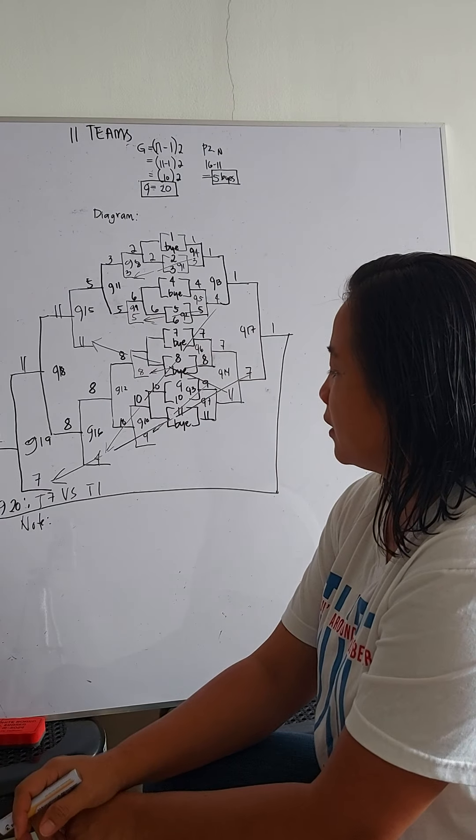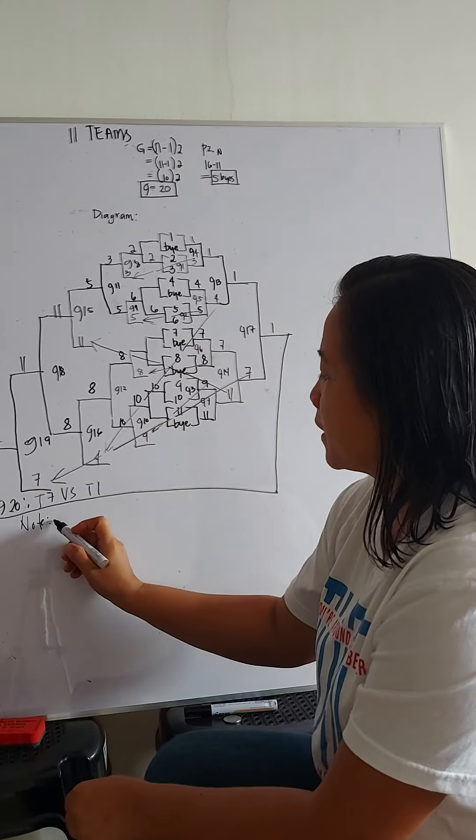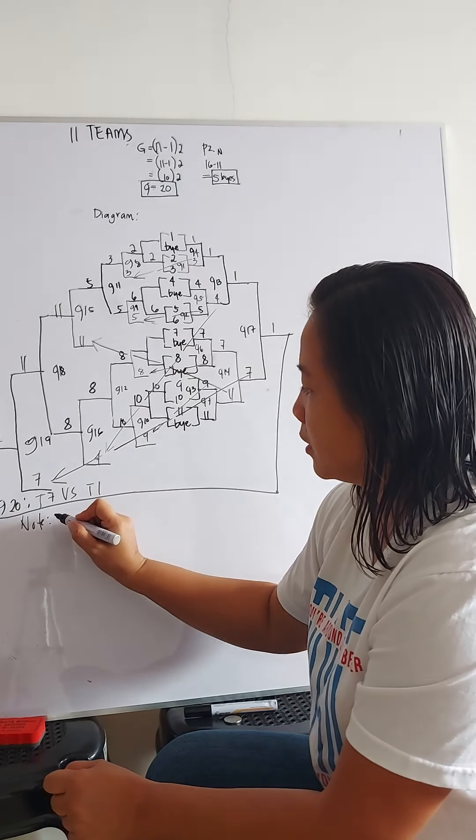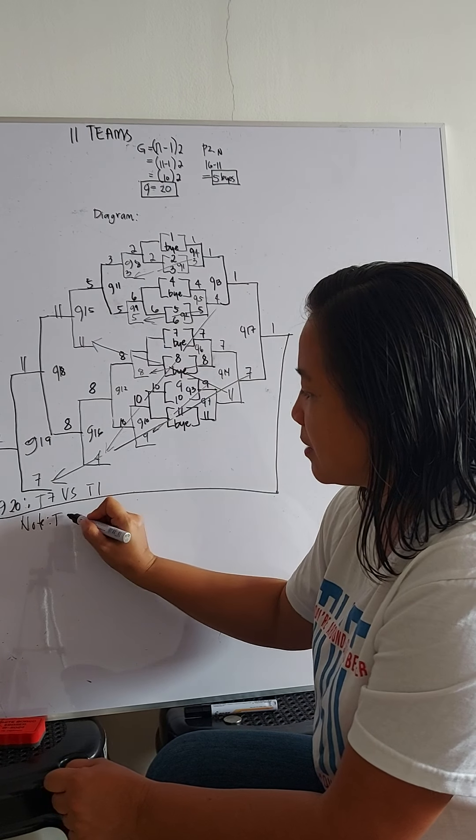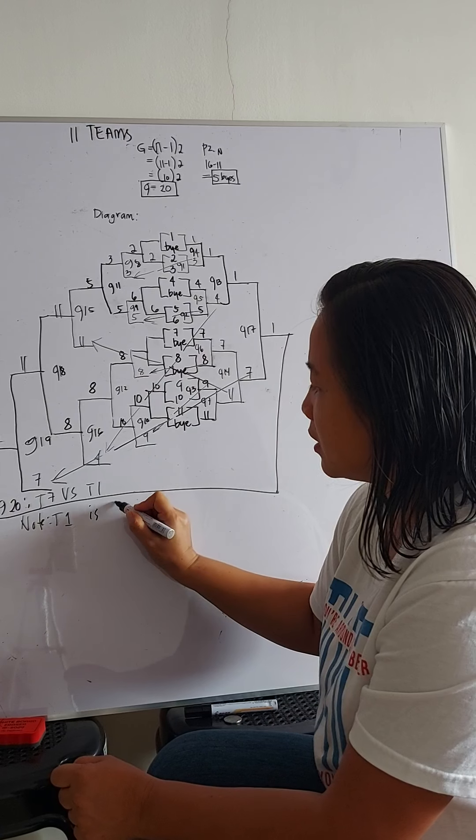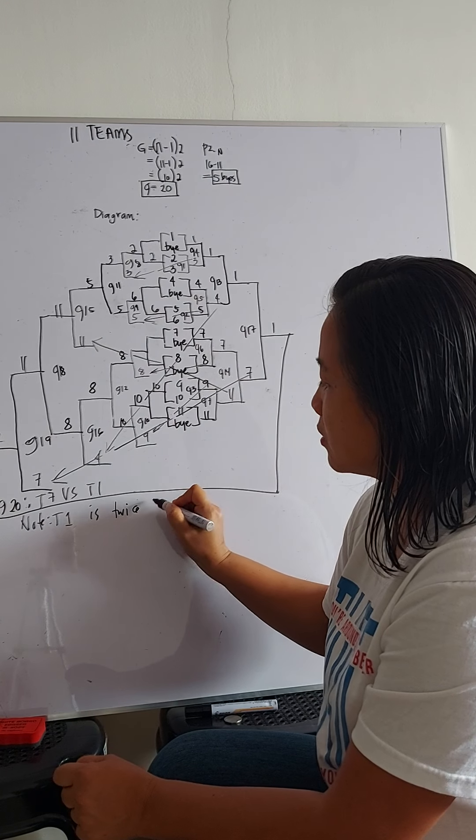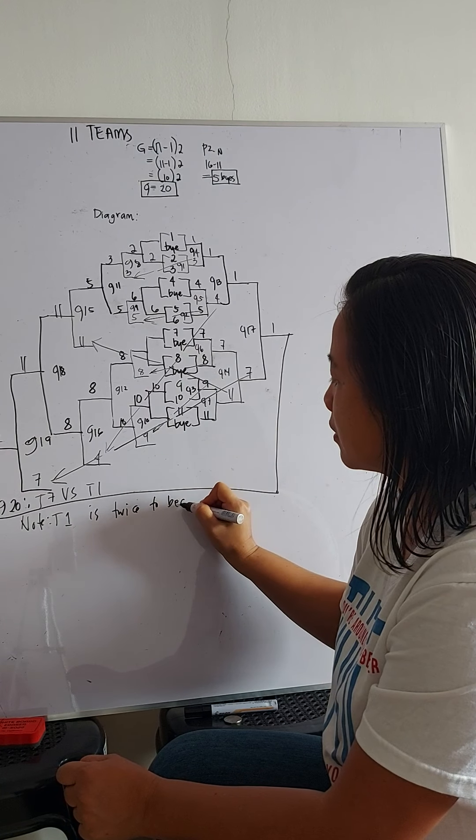So, again, we cannot say that team 1 is the champion automatically because it's still situational. So, we'll write a note here that team 1 is twice to beat. That's all. Thank you.